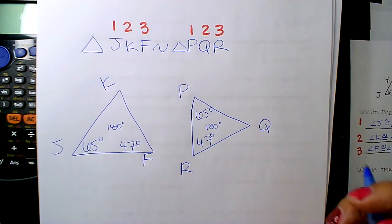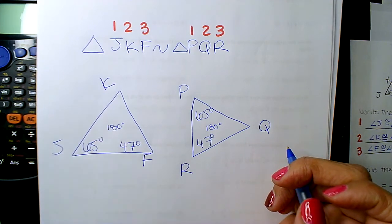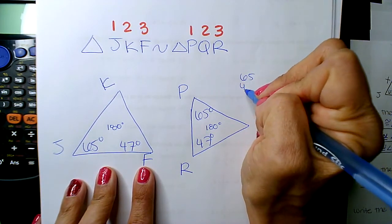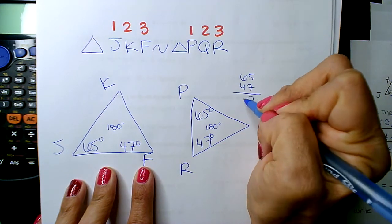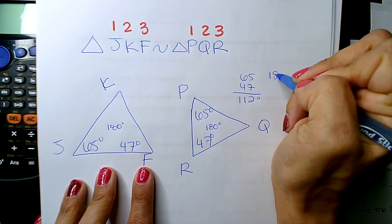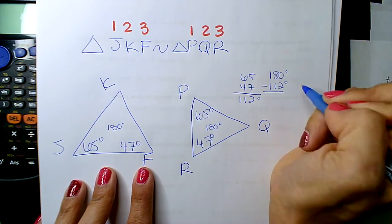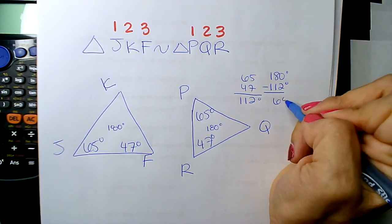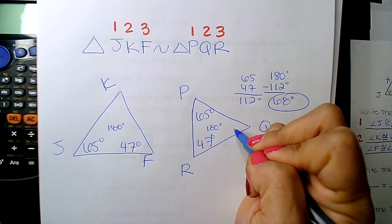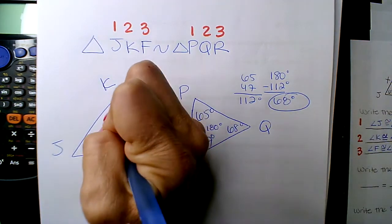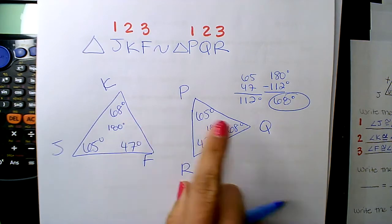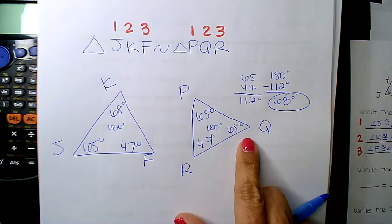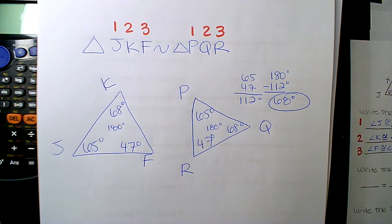Okay, so, triangle sum theorem says all three angles must be 180 degrees. So, 65 plus 47 is 112. What do you get? Huh? 68. 68, perfect. And so, you get 68 degrees, and that's what F and Q are. Not F and Q. K and Q are then 68 degrees.